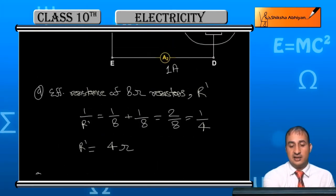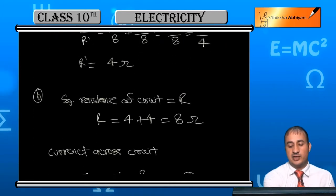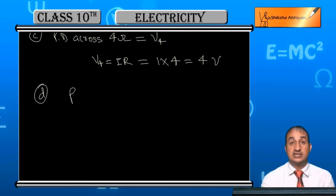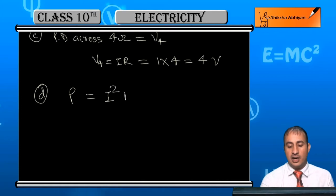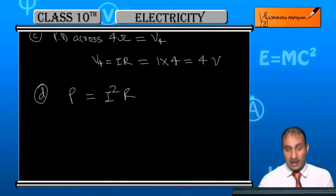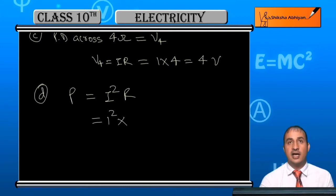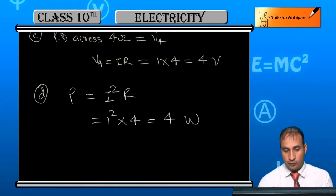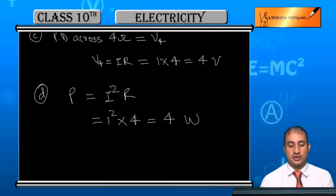For Part D, we need to find the power dissipated in the 4-ohm resistor. Power P = I²R. Here I = 1 ampere, so I² = 1, and R = 4 ohm. Therefore power dissipated = 1 × 4 = 4 watt. The power dissipated in the 4-ohm resistor is 4 watts.